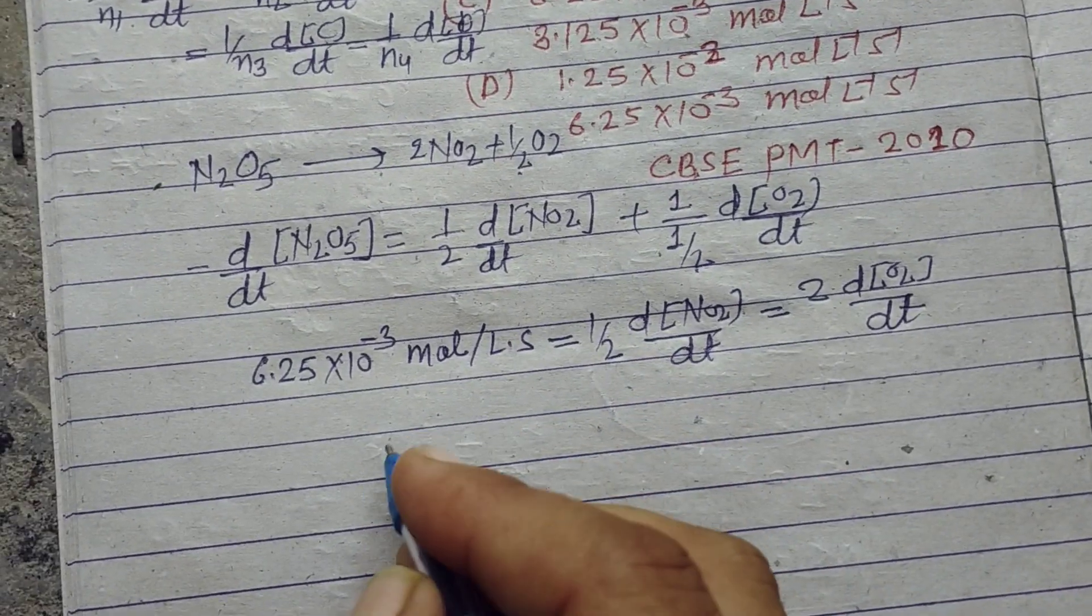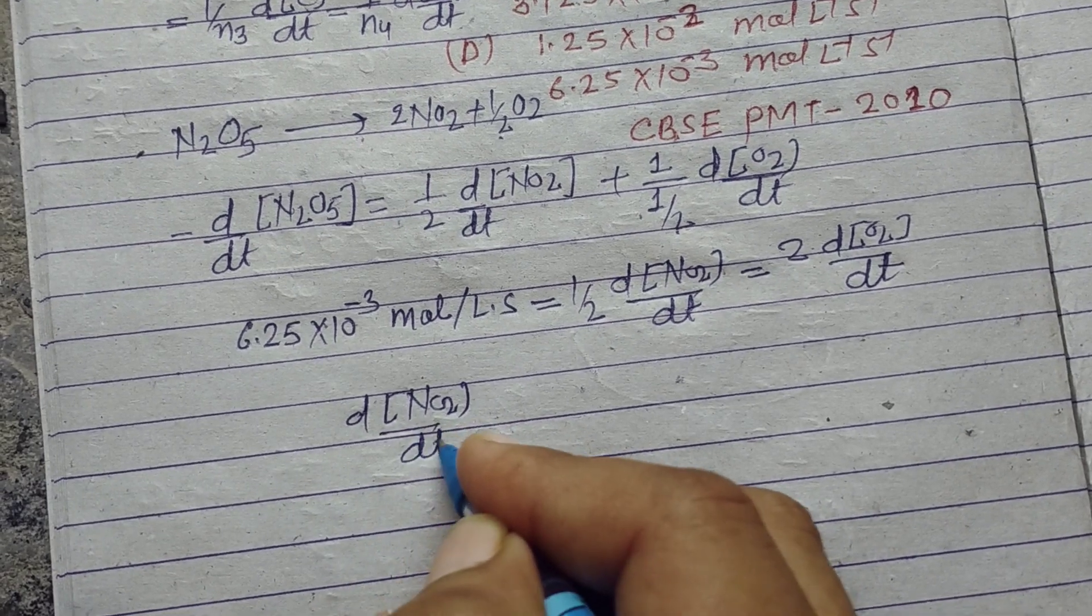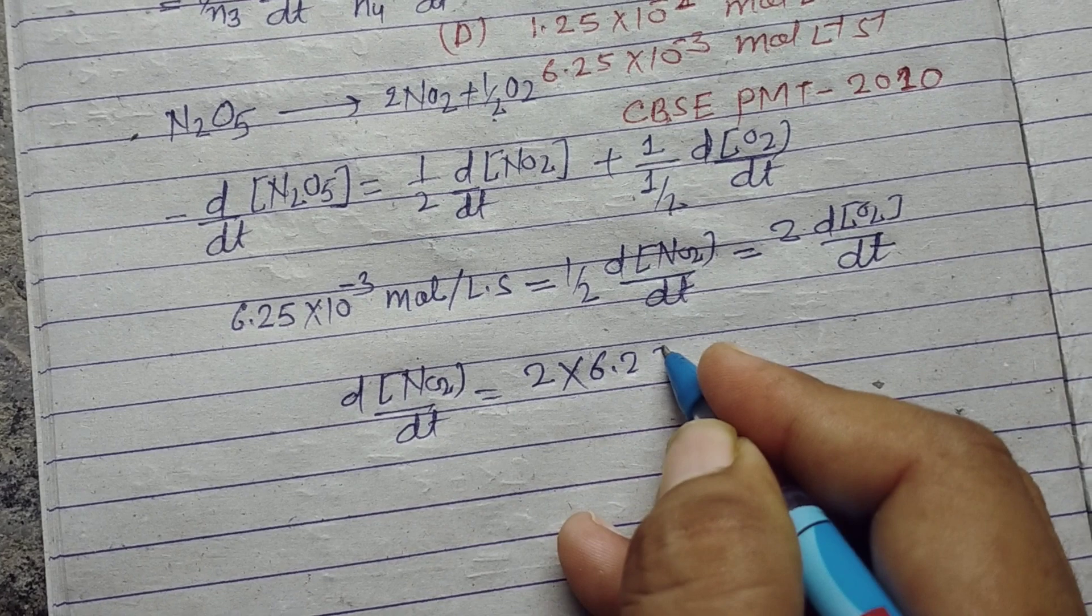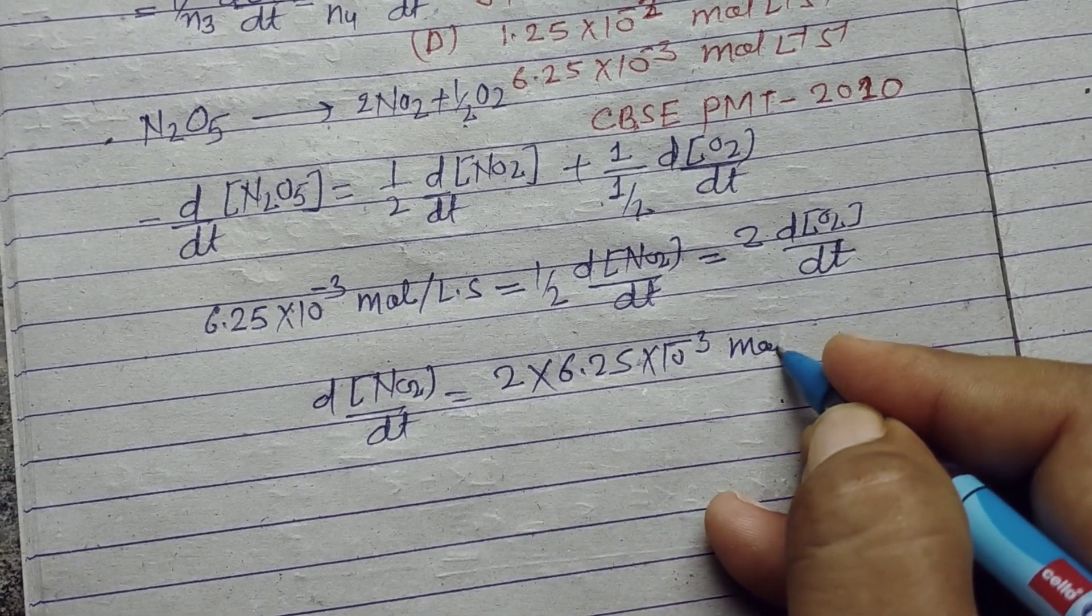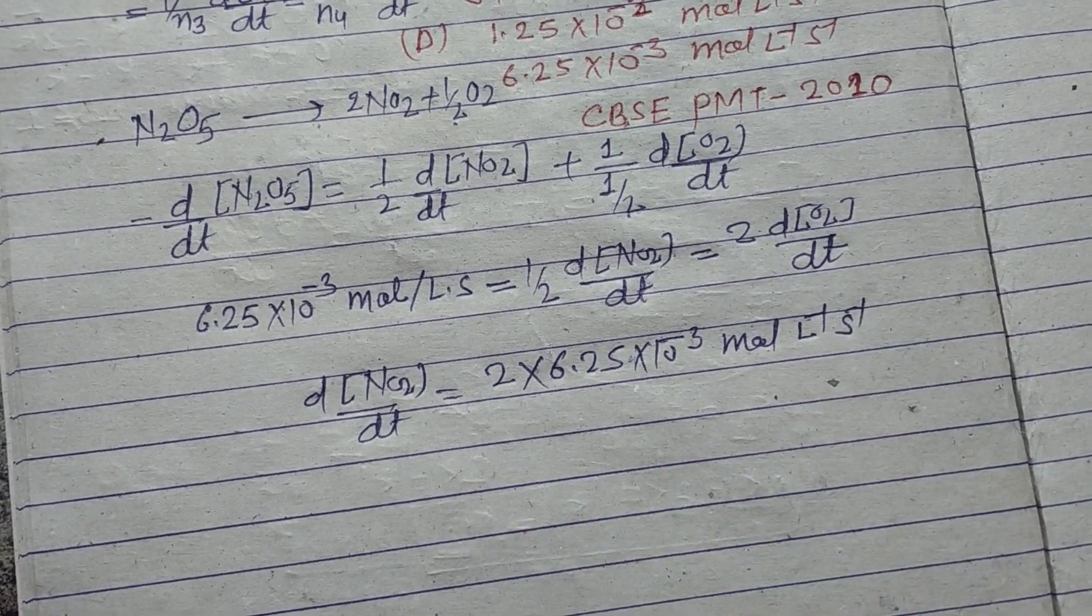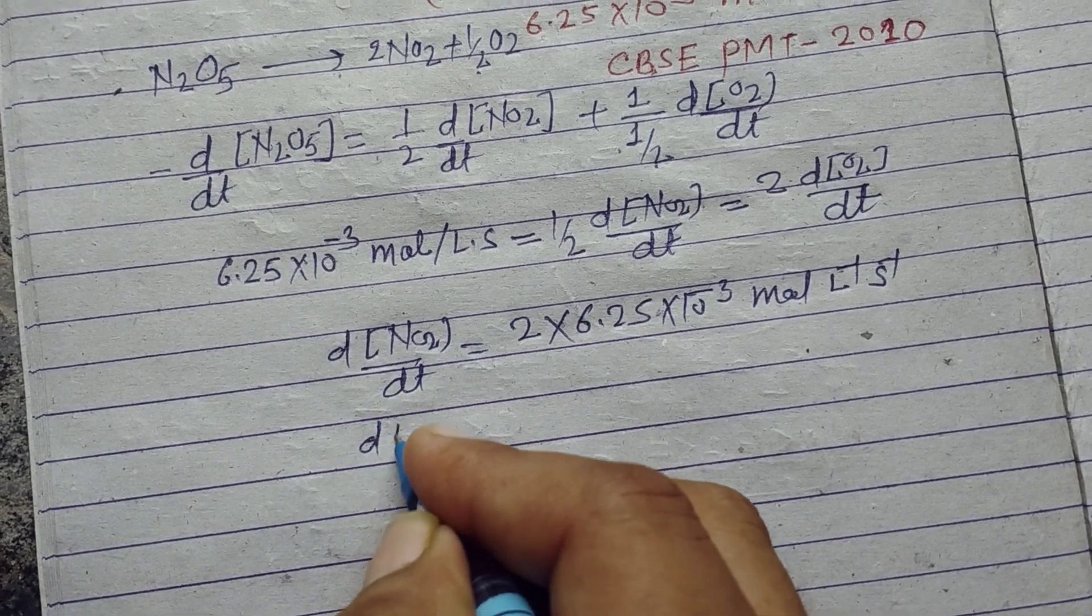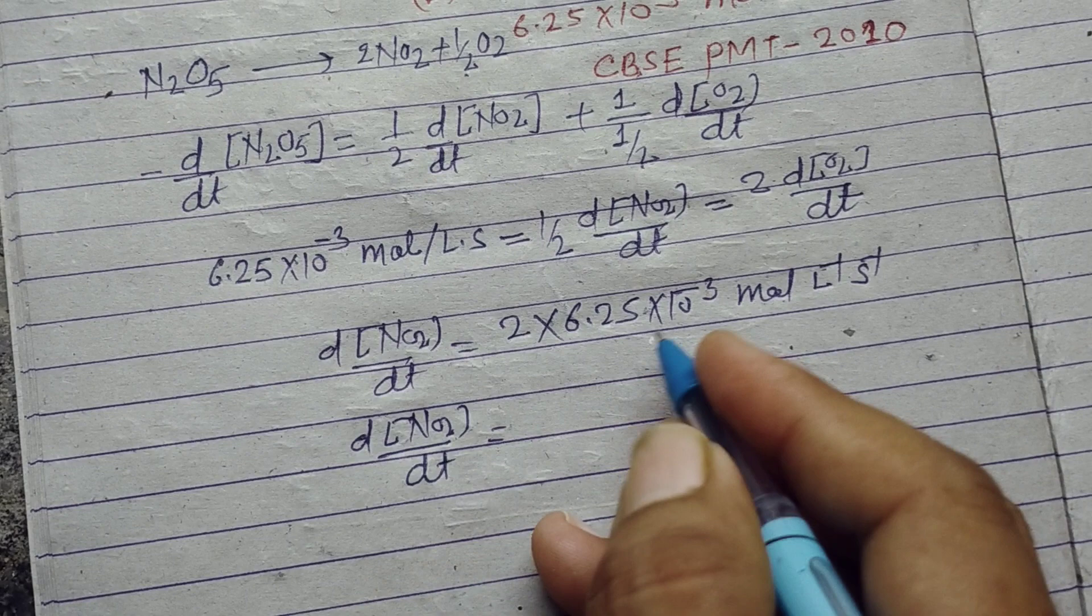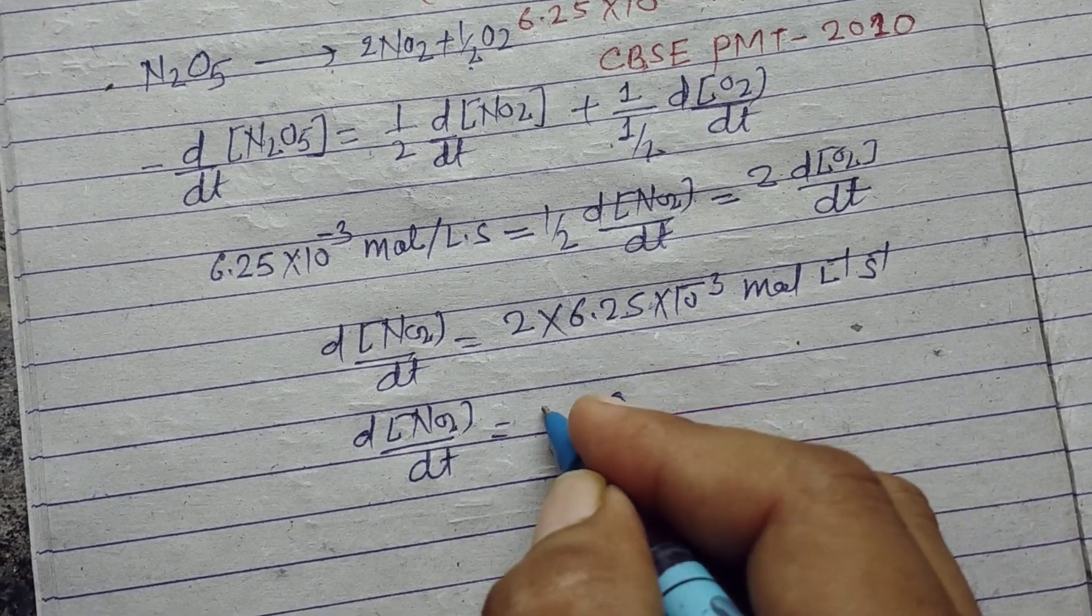So rate of formation of NO2 is equal to 2 times 6.25×10^-3 mol per liter per second. So this will be d[NO2]/dt, 25 to 50 and 6 twos are 12.